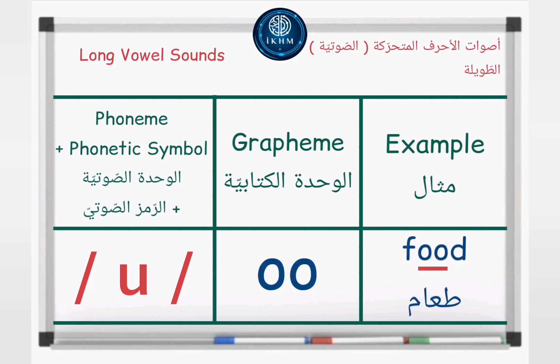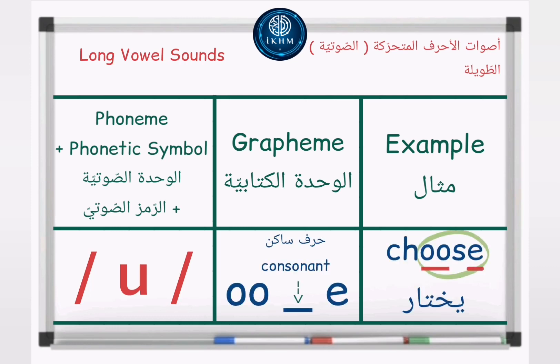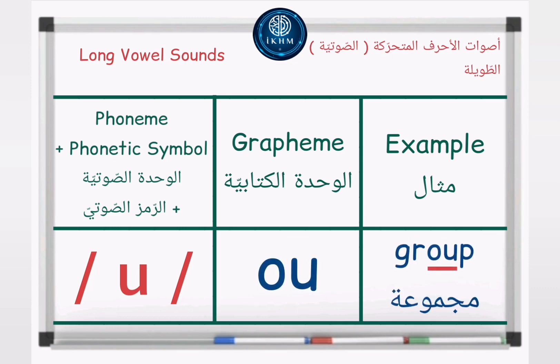Grapheme — letters OO, example: 'food' /uː/. Grapheme — OO consonant E, example: 'choose' /uː/.